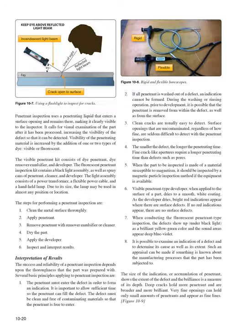Penetrant inspection uses a penetrating liquid that enters a surface opening and remains there, making it clearly visible to the inspector. Visibility is increased by the addition of dye — either visible or fluorescent. The visible penetrant kit consists of dye penetrant, dye remover emulsifier, and developer. The fluorescent penetrant inspection kit contains a black light assembly plus spray cans of penetrant, cleaner, and developer. The steps for performing a penetrant inspection are: (1) clean the metal surface thoroughly; (2) apply penetrant; (3) remove penetrant with remover emulsifier or cleaner; (4) dry the part; (5) apply the developer; (6) inspect and interpret results.